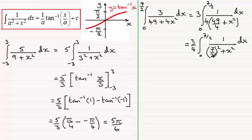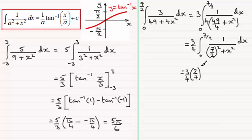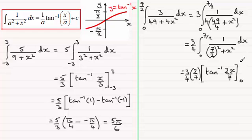Cleaning this up further, pulling the 4 out front of the integral gives us 3 quarters. Then the integral from 0 to 7 over 2 of 1 over (7/2) squared plus x squared. The integral part gives 1 divided by a — that's 1 divided by 7 over 2, which is the same as 2 over 7. So we have 3 quarters multiplied by 2 over 7, and the inverse tan of x divided by 7 over 2, which is 2 over 7 times x, between limits 0 and 7 over 2.